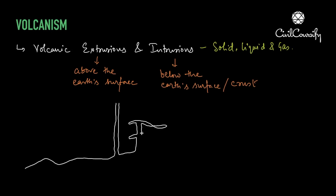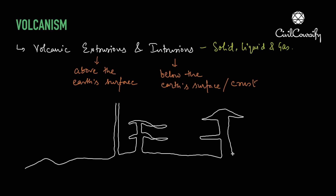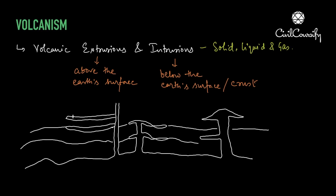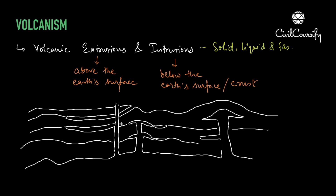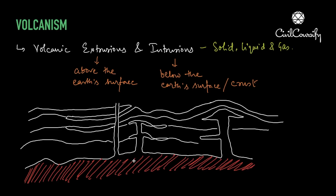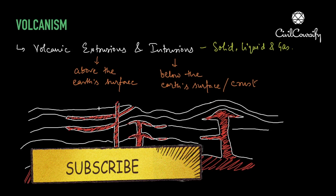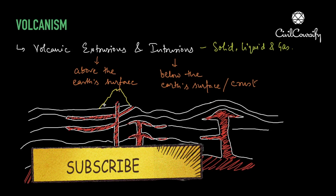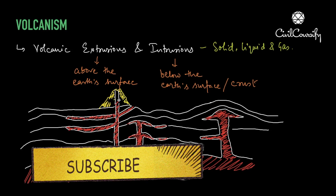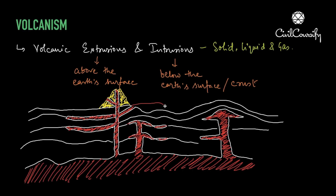When magma comes out of the mantle from the crust, we call it intrusion. Magma forms different landforms depending upon the strength and fluidity of magma, the types of cracks that are there inside the earth's crust, and what kind of faulting is present in the earth's crust. These cracks, faulting, and joints are penetrated by magma and new landforms are formed.